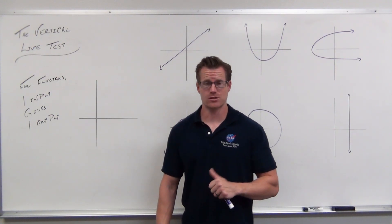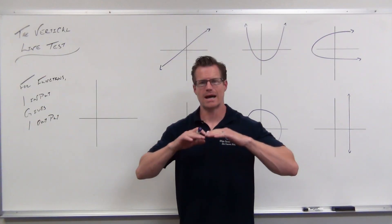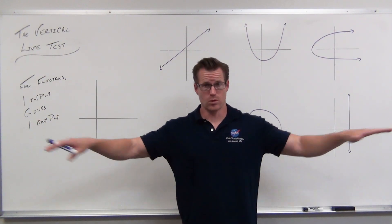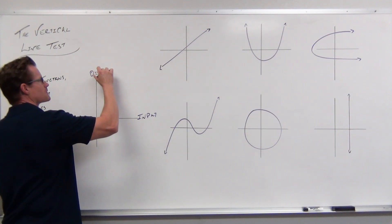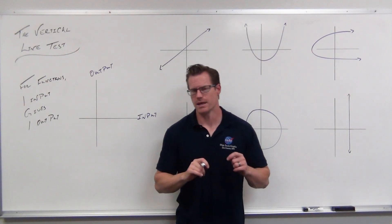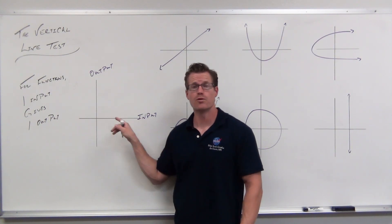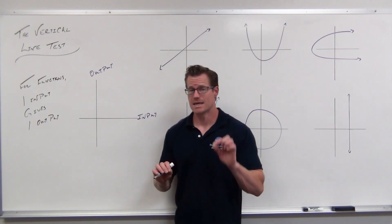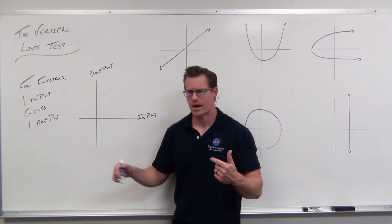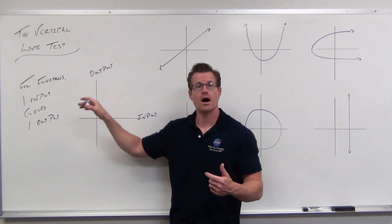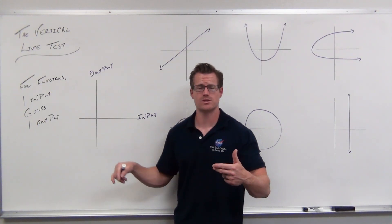So what we're going to focus on is why the vertical line test actually works. We've got to know that the input axis is the horizontal axis — unless we switch that around, the horizontal axis is for inputs. So if this is the input axis and this is the output axis, when we pick a number to plug in on the input axis, it's a horizontal idea. We move horizontally to locate different inputs. However, for any given input, the output will be somewhere above or below it. That's why our output axis is vertical. You go over to an input, then you go up or down for your output.